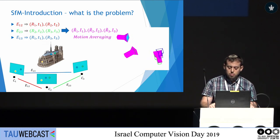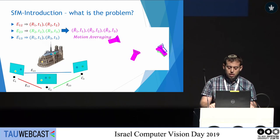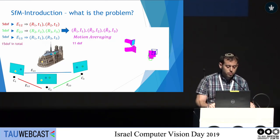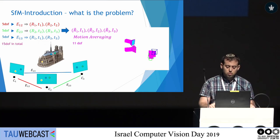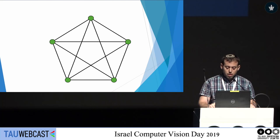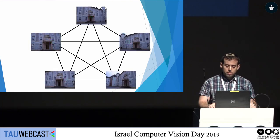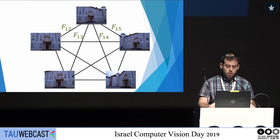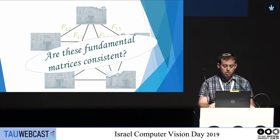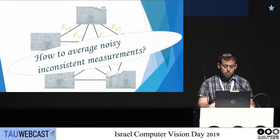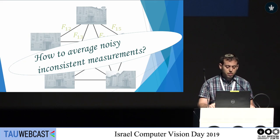This is called motion averaging. It reduces the degrees of freedom from those of the essential matrices to the degrees of freedom of the cameras. In this work, we assume we are given a set of images with fundamental matrices computed between them, and our question is: what makes these fundamental matrices consistent with each other, and if they are not consistent, how can we average noisy measurements to camera matrices?